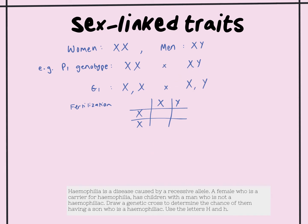When we look at fertilization, there's a 50-50 chance of having a girl — two X chromosomes — where they inherit an X from their mum and an X from their dad, or a 50% chance of having a boy. If you're asked to explain why biological sex is a 50-50 chance, it's because a man can give either an X or a Y chromosome. The woman always gives an X, so it's actually the male's gametes that determine the biological sex of a child.